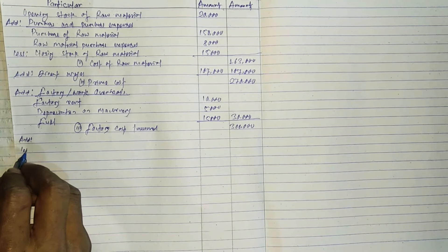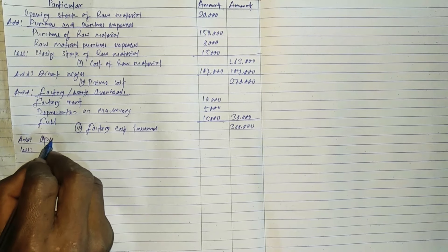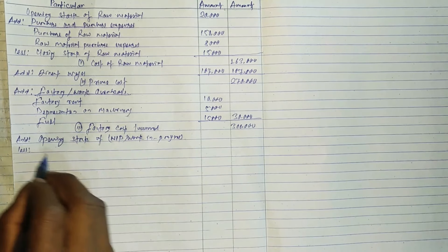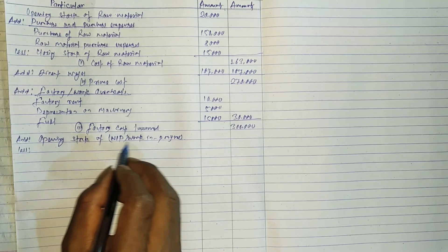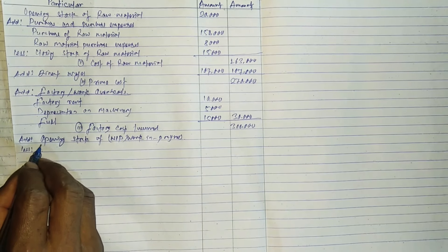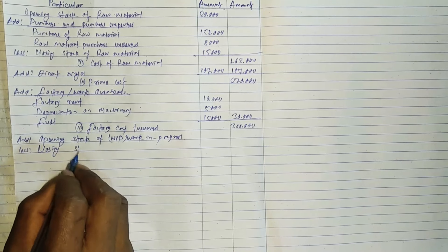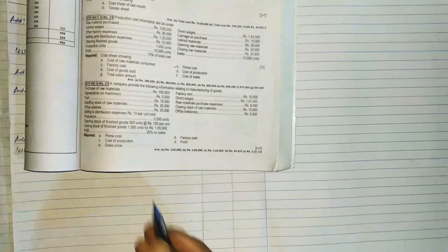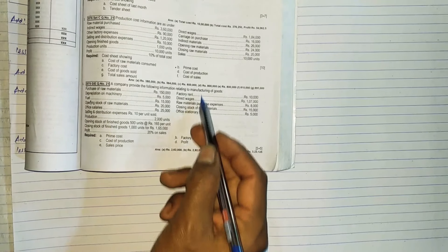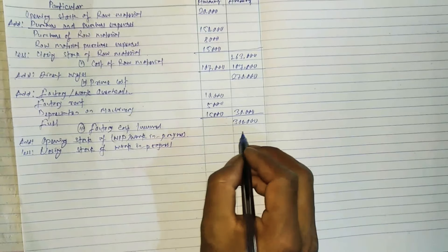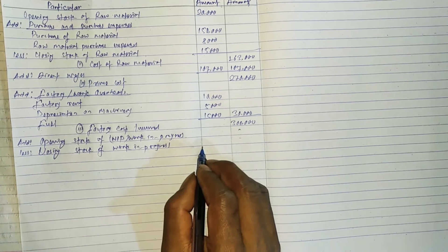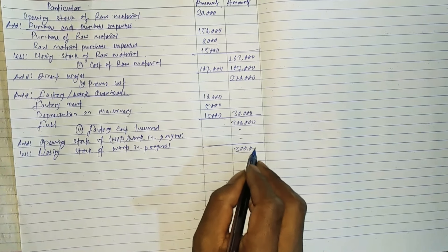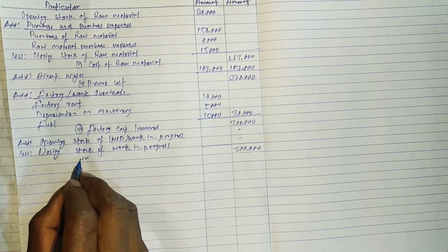Now we add WIP — Work in Progress. The opening stock of WIP and the closing stock of WIP: in the question, work-in-progress is nil. The factory cost total, adding WIP adjustments, gives us three lakh. The answer for factory cost is three lakh.